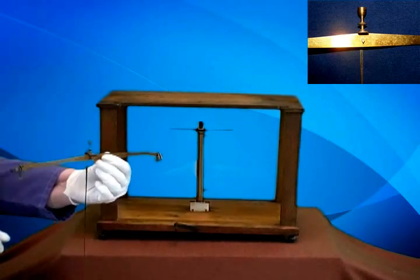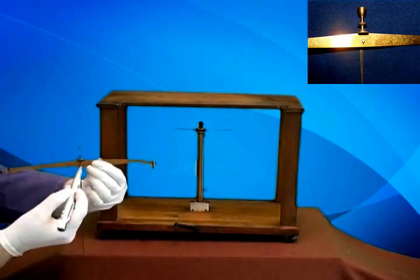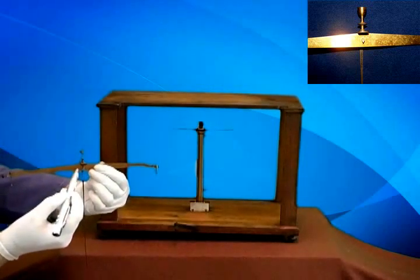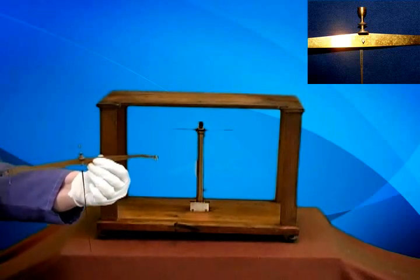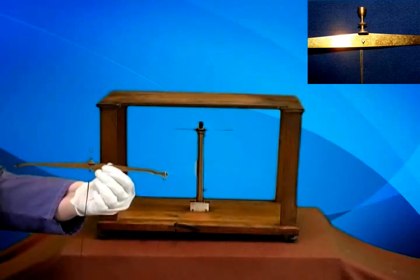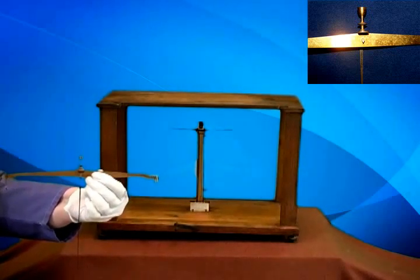Now, I want you to notice on this beam that there is a triangular area right here. And this triangular area is the knife edge. The knife edge probably in Dalton's time would have been made of steel, but the more modern ones were made of sapphire or agates.